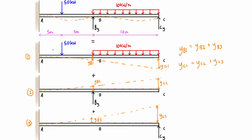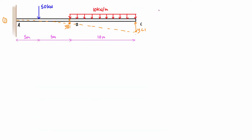Now let's apply the moment area method to case 1. First, looking at the sum of forces in the Y direction: we have 50 kN going down, plus 10 kN/m times 10 meters equals 100 kN going down, for a total of 150 kN downward. Therefore the reaction AY must be 150 kN upward.